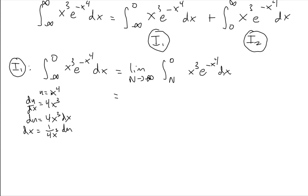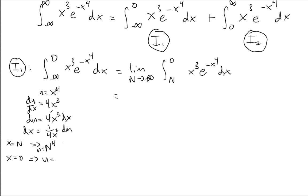I also need to calculate what my bounds are going to be in terms of u. When x equals n, u equals n to the power of 4. When x equals zero, u equals zero. So now I have all the pieces needed to carry out this substitution.